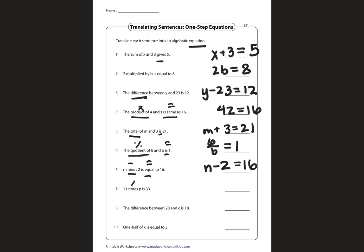11 times, multiplication, t is 33. So 11t equals 33. Let's go on to the next one.